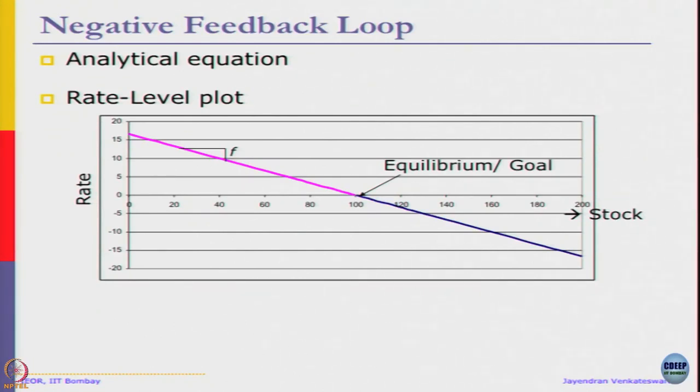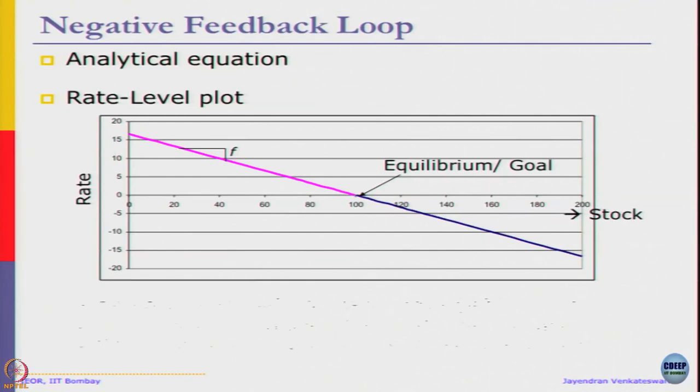Any push in either direction will bring the system back to that same equilibrium point. The slope affects the time it takes to reach equilibrium, which is 1/AT. Time constant adjustment time is 1/f, the time required to reduce 63 percent of discrepancy. Smaller AT corrects discrepancy faster; larger f corrects discrepancy faster.